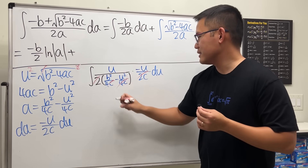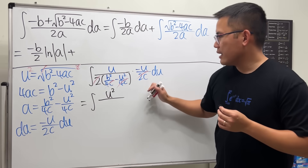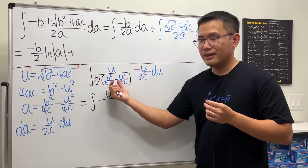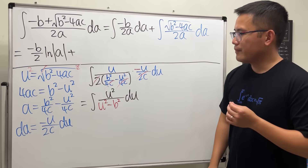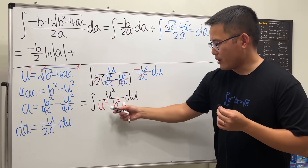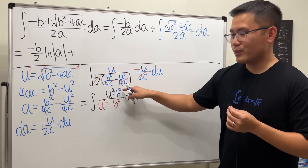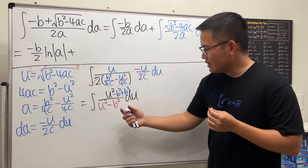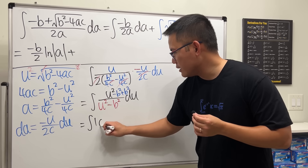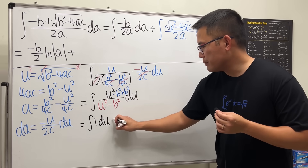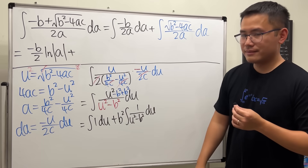After cancellation, u times u is u², so we have the integral of u² over (u² − b²). To simplify, we do polynomial long division: match the denominator by writing u² = (u² − b²) + b², splitting the fraction into 1 plus b²/(u² − b²). So the integral becomes the integral of 1 in the u-world, plus b² times the integral of 1/(u² − b²).